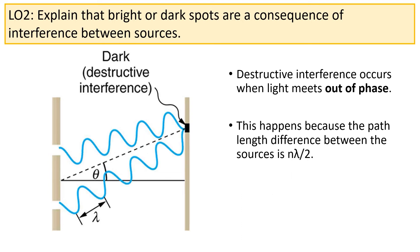Conversely, we get destructive interference at other points because the light is meeting out of phase. The light meets out of phase when the path length difference between the slits is equal to nλ/2.